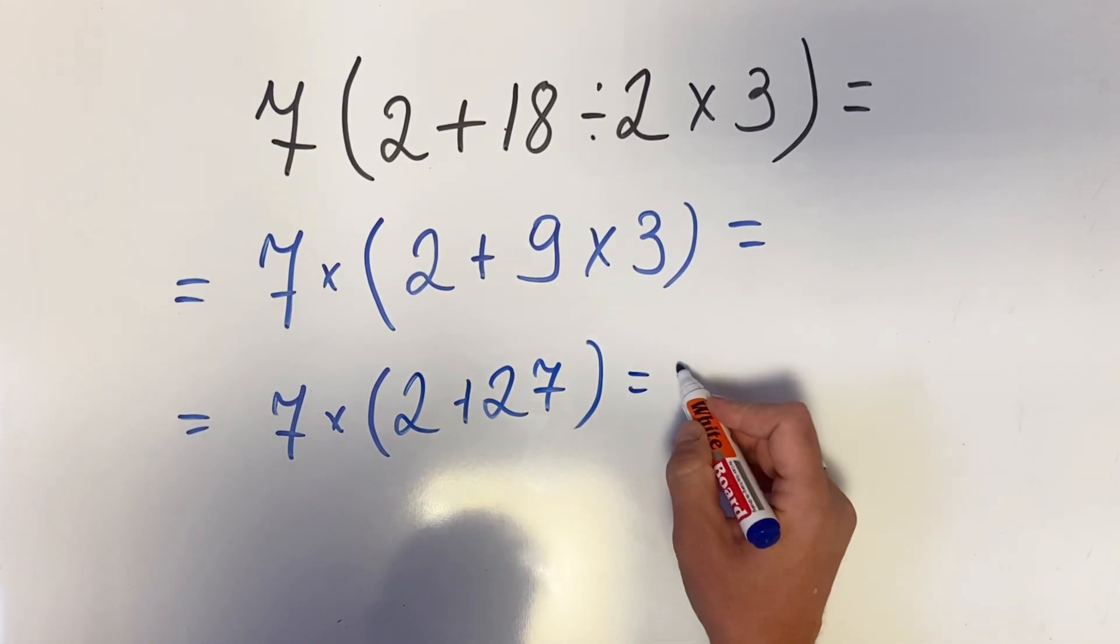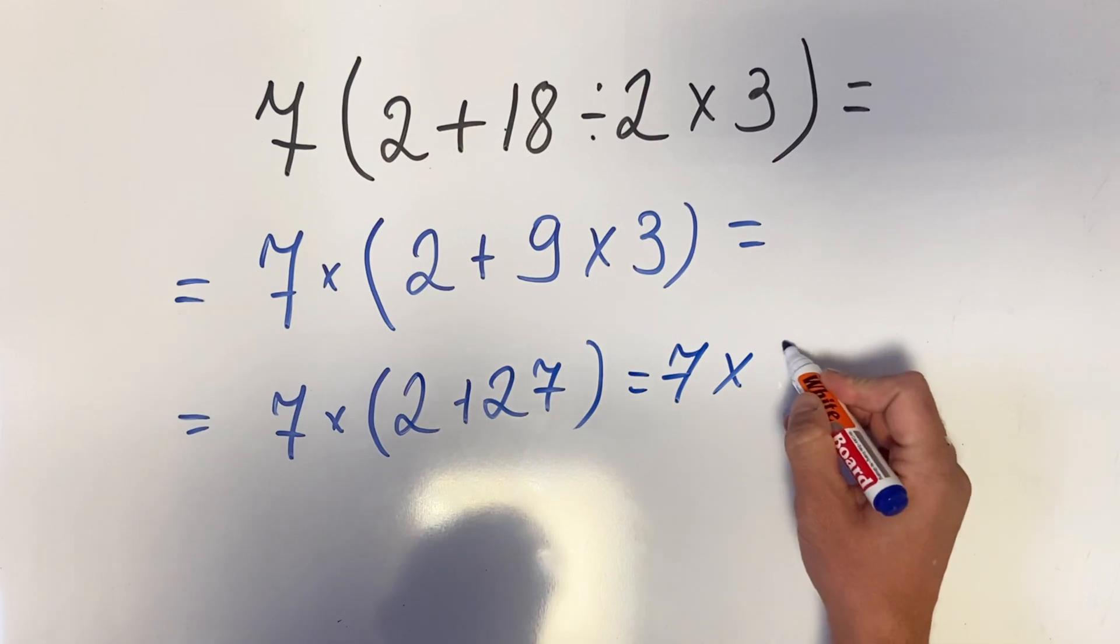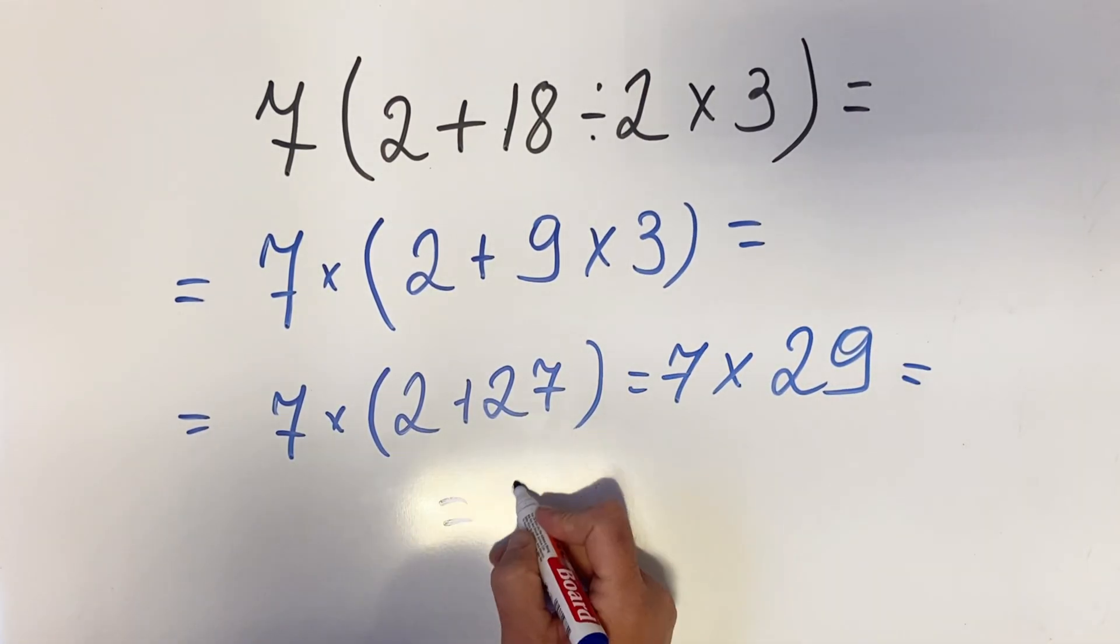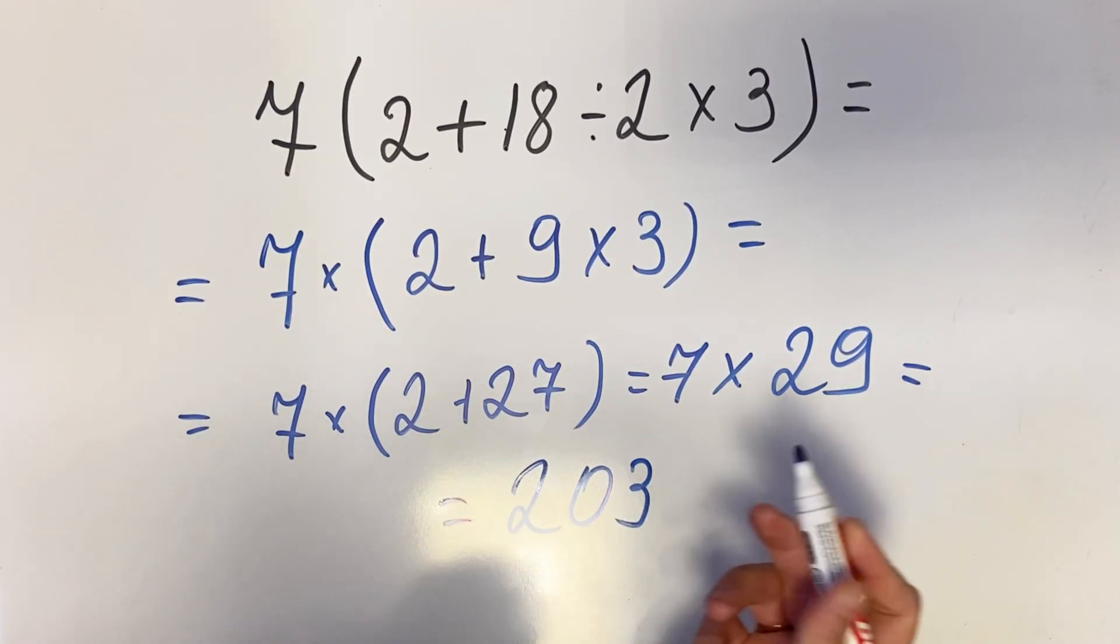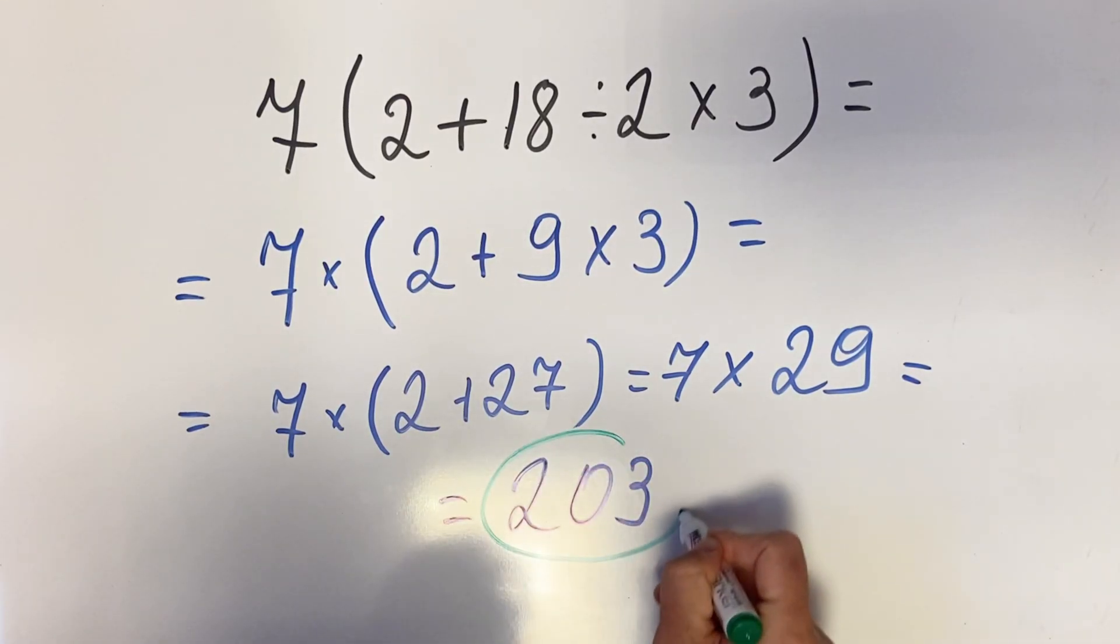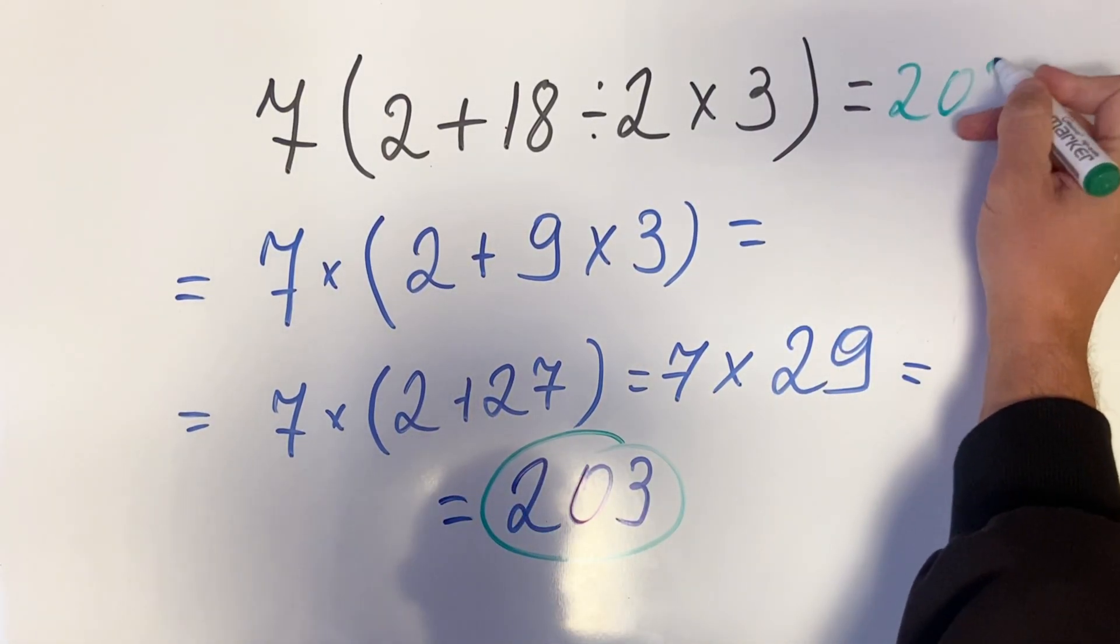And in the end we get 7 multiplied by 29 which equals 203. So this is the correct result guys, 203.